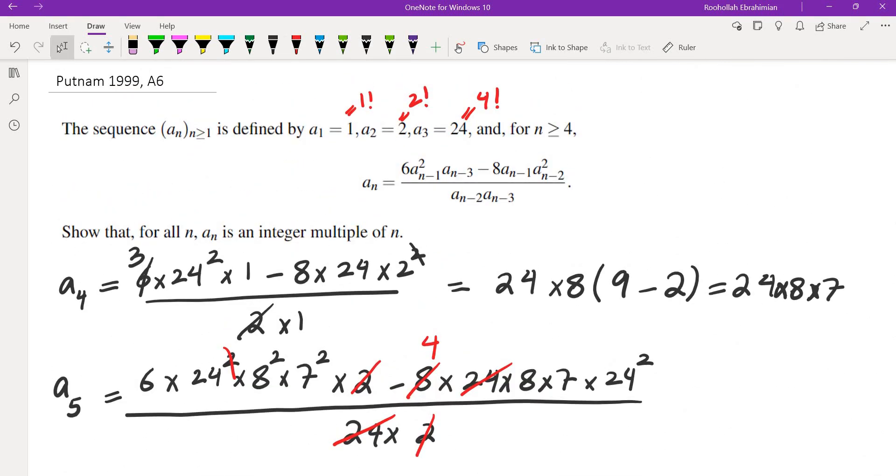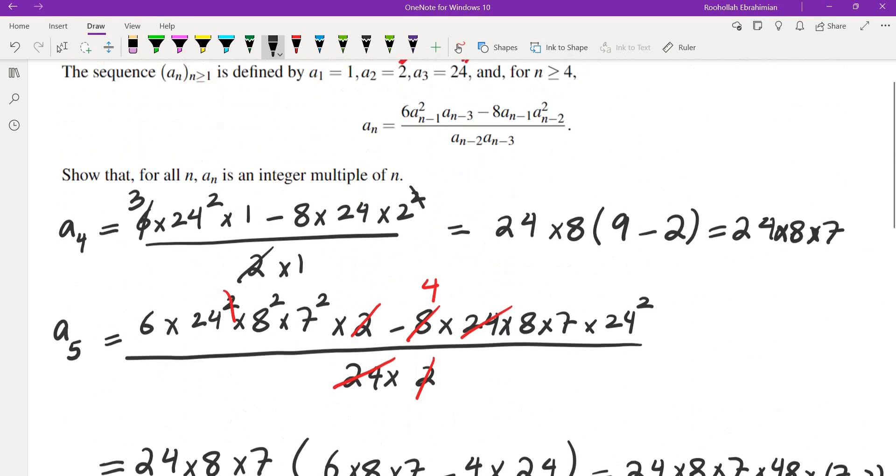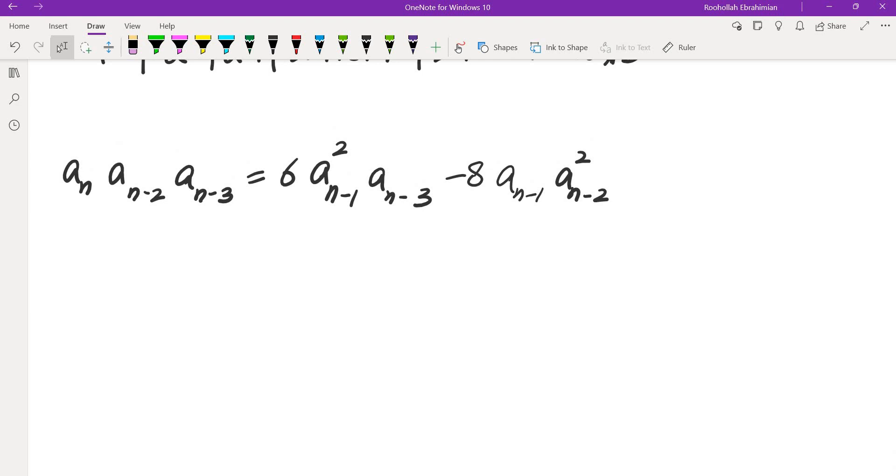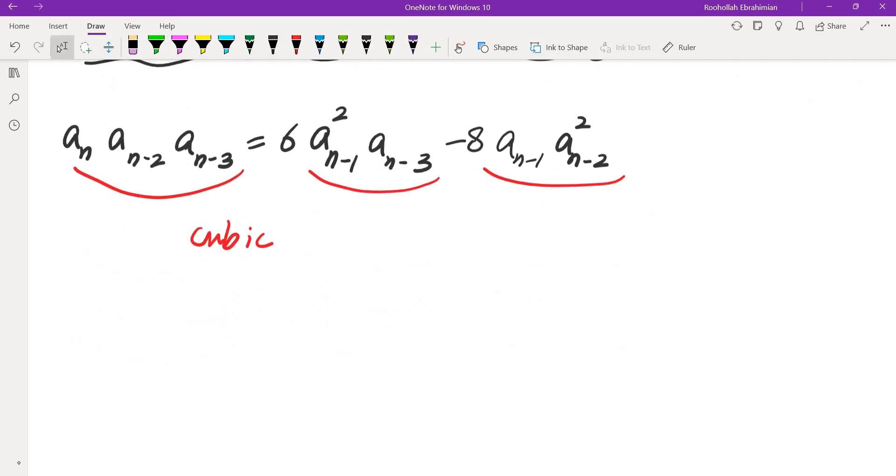The other thing is, if we look at the recursion, I can rewrite the recursion this way: An times An-2 times An-3 is equal to 6An-1 squared times An-3 minus 8An-1 times An-2 squared. I noticed that both of these two sides are in fact cubic. So they are all a product of three terms of the sequence. And also by the observation I have here, putting those two things together, maybe we can modify the recursion in terms of the ratio of each two consecutive terms. So that was the motivation for a new sequence. Let's take the sequence of ratios, and if I can show that this sequence is an integer, then of course An would automatically be an integer.